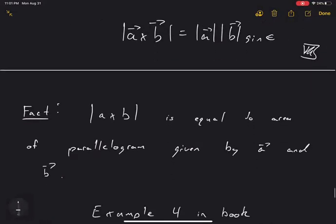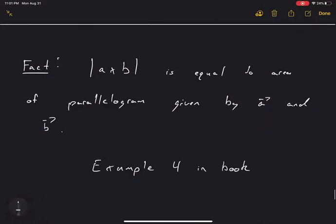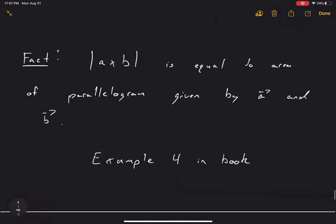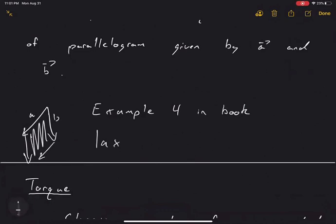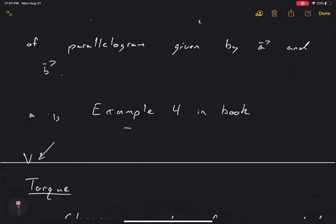A nice connection: |A cross B| equals the area of the parallelogram formed by vectors A and B. If you draw A and B and complete the parallelogram, that area equals the magnitude of the cross product. See example 4 in section 12.4 of the book for more details.